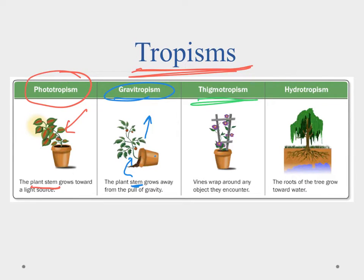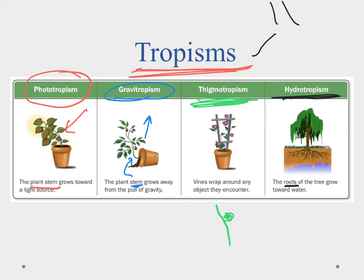Next is thigmotropism, which is a response to touch. This is seen primarily in vines, where a curling tendril will wrap around whatever it touches. Some plants react to touch differently, like a Venus flytrap — when a fly lands inside and triggers a hair, it closes its leaves and secretes digestive enzymes to get nutrients. Finally, hydrotropism affects the roots of a plant: roots grow toward water. If a tree sends out roots in all directions and finds water in one area, it will send more roots toward that water source to get enough water for the plant to live.